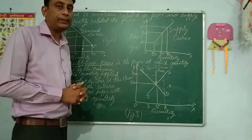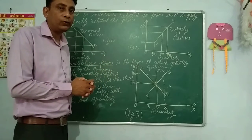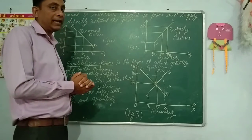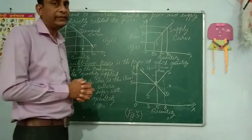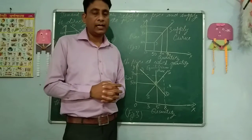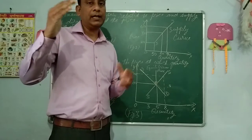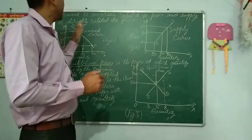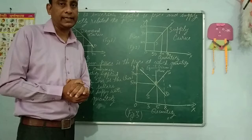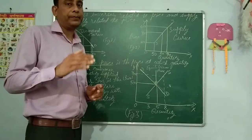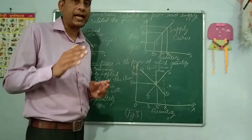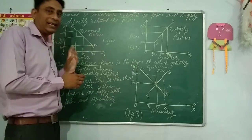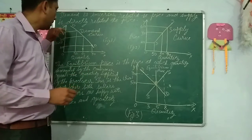I have already explained the demand curve in Part 1, but let me refresh you. Demand is inversely related to price — when price rises, demand decreases, and when price decreases, demand increases. Supply is directly related to price — when price rises, supply also increases, and when price decreases, supply also decreases.